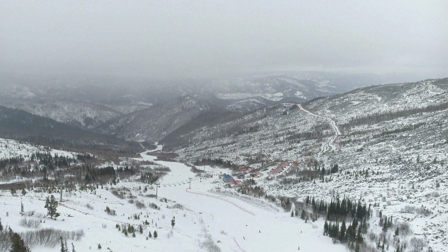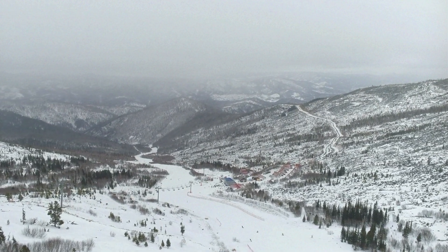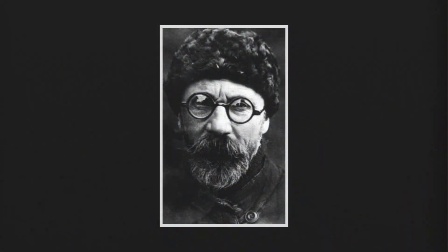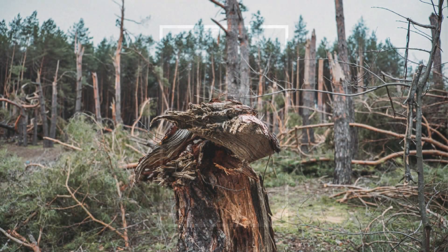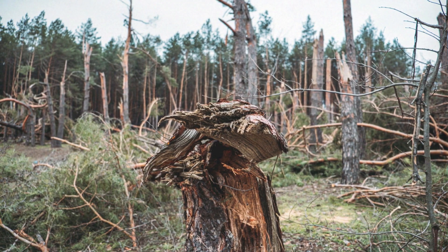Scientific investigations into the Tunguska event didn't begin until 1927, due to the remoteness of the area and logistical challenges. Led by Russian scientist Leonid Kulik, the first expedition found trees scorched and flattened in a radial pattern, but no evidence of an impact crater. This anomaly gave rise to the dominant theory that the event was caused by an airburst, a meteoroid or small comet exploding in the atmosphere at an altitude of approximately 5 to 10 kilometers, or 3 to 6 miles high, but disintegrating before reaching the ground.